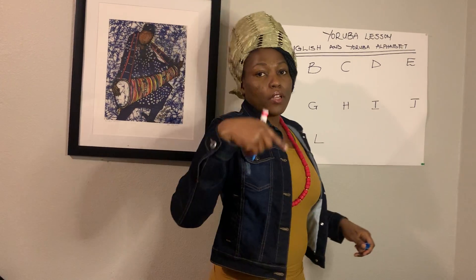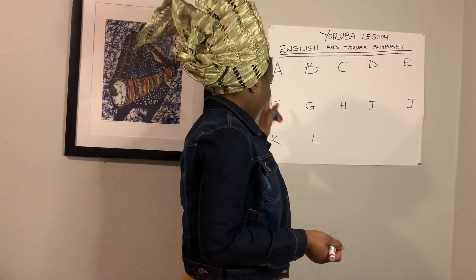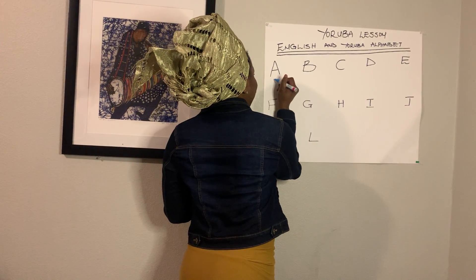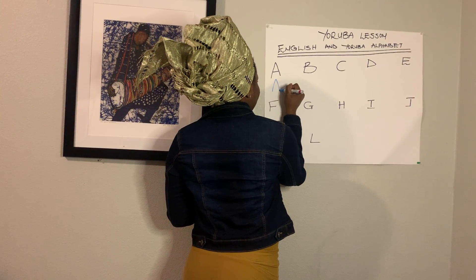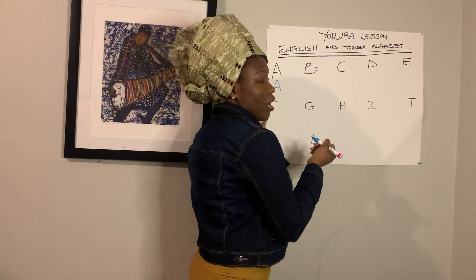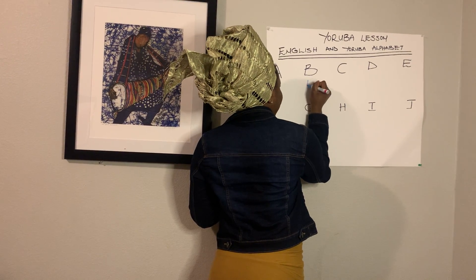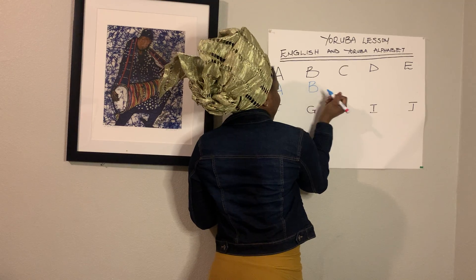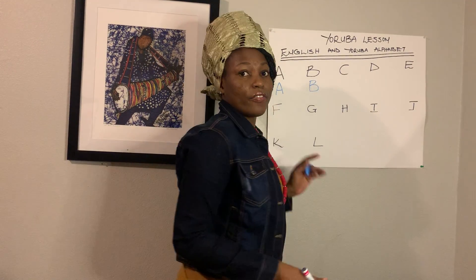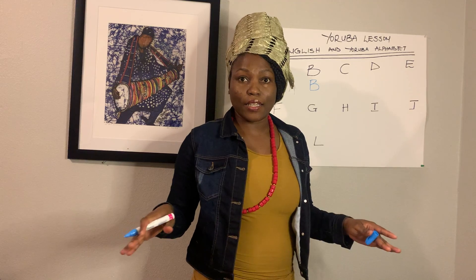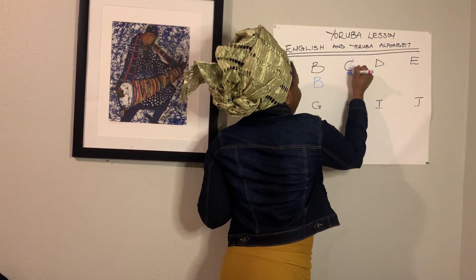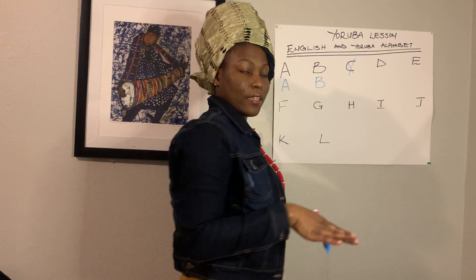Alright, let's get started. So A is going to be 'ha' — we got A is 'ha'. We call B, 'b'. C — we don't have the letter C in the Urhobo alphabet, so we're going to cross this out. We don't have C.